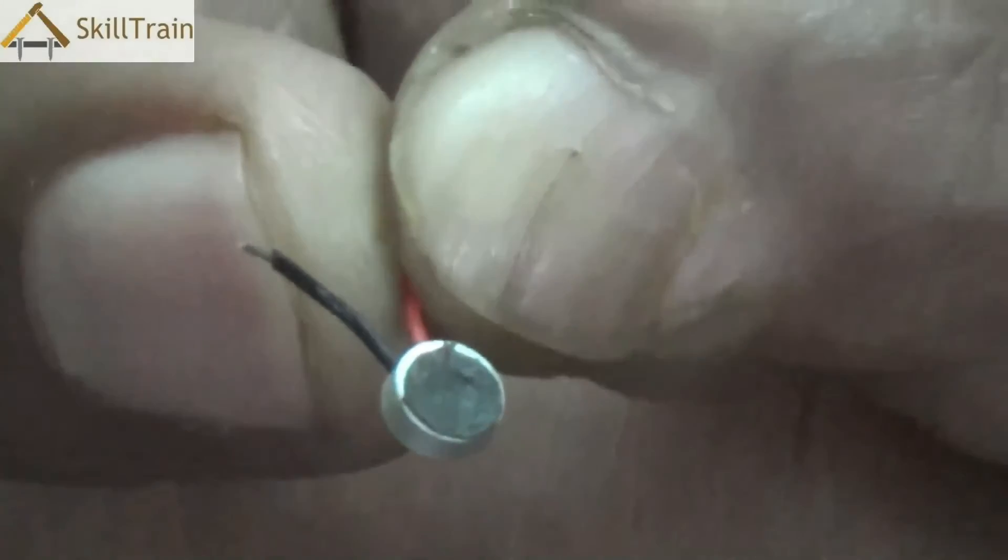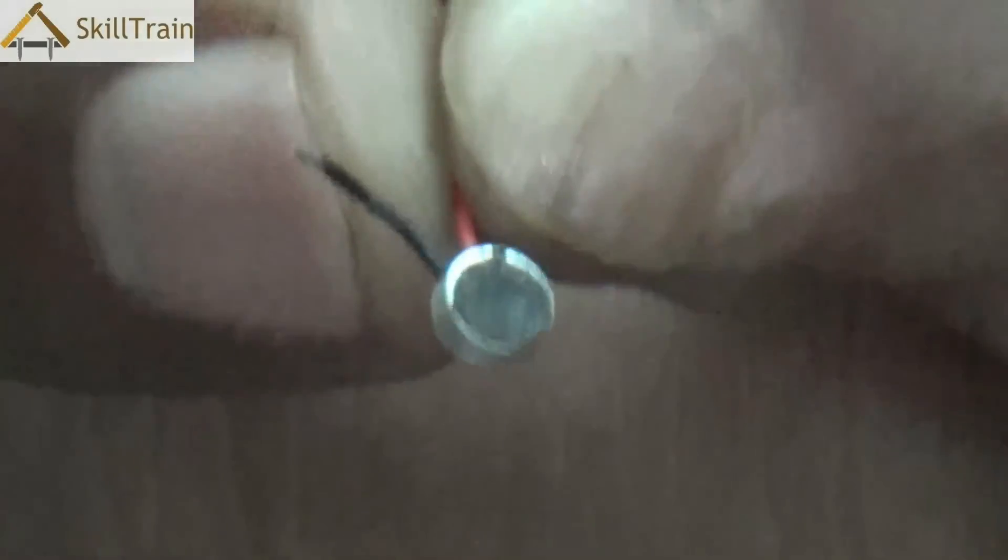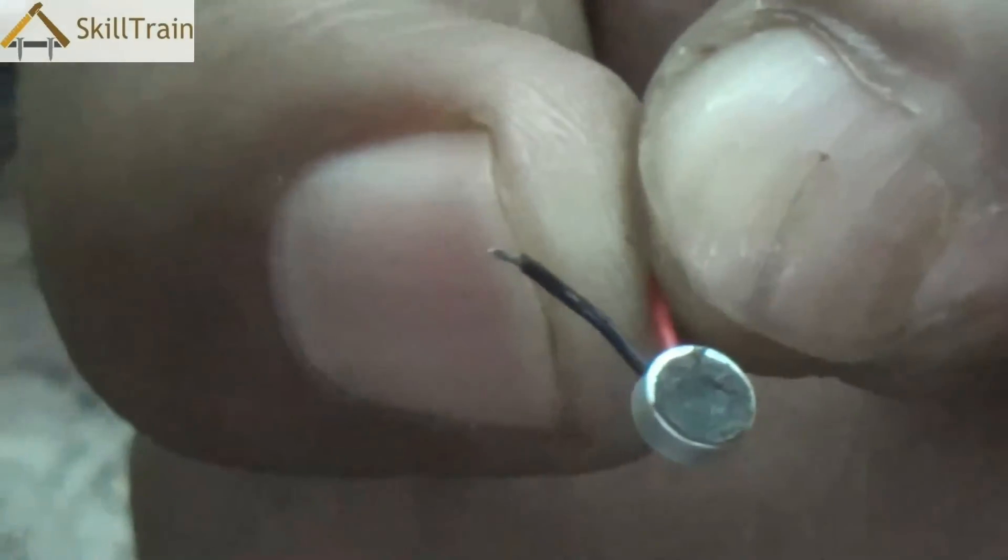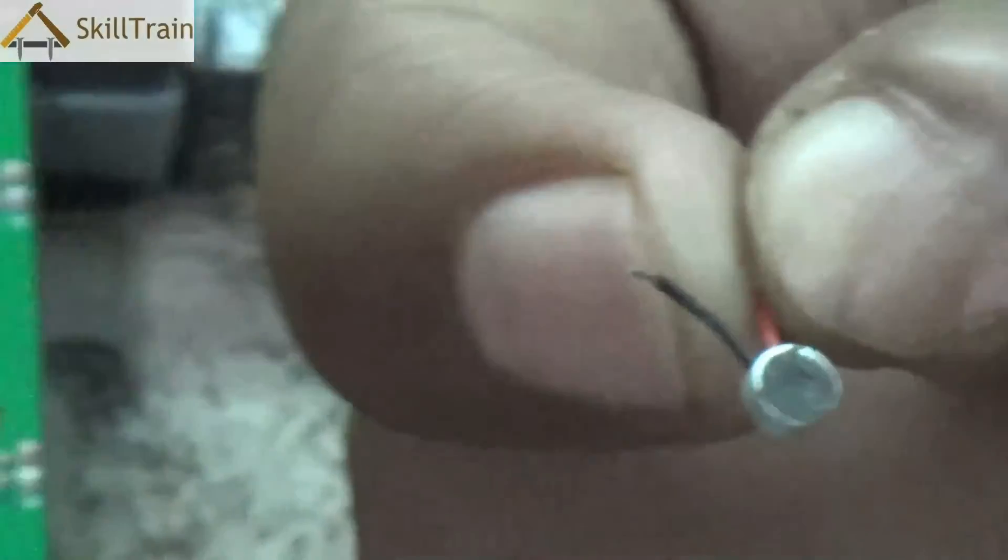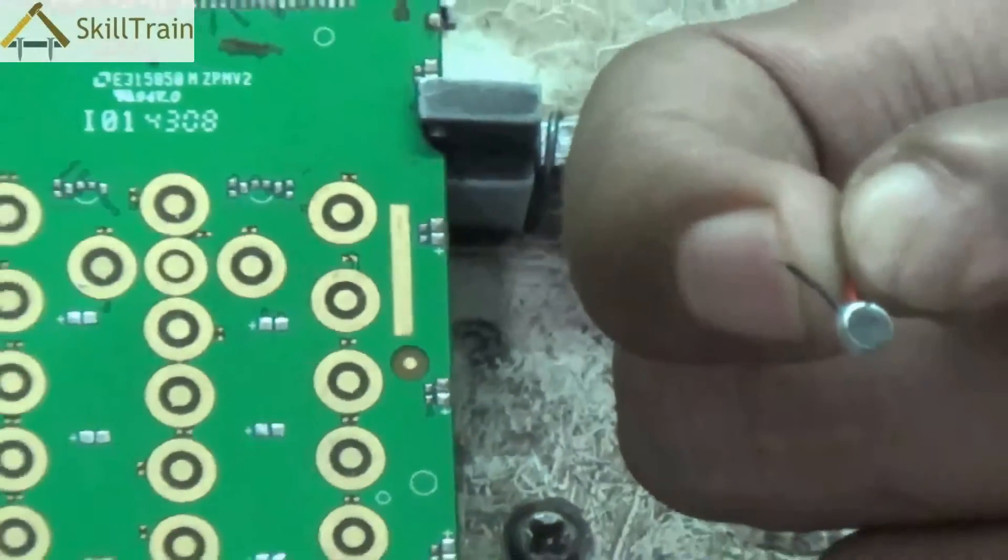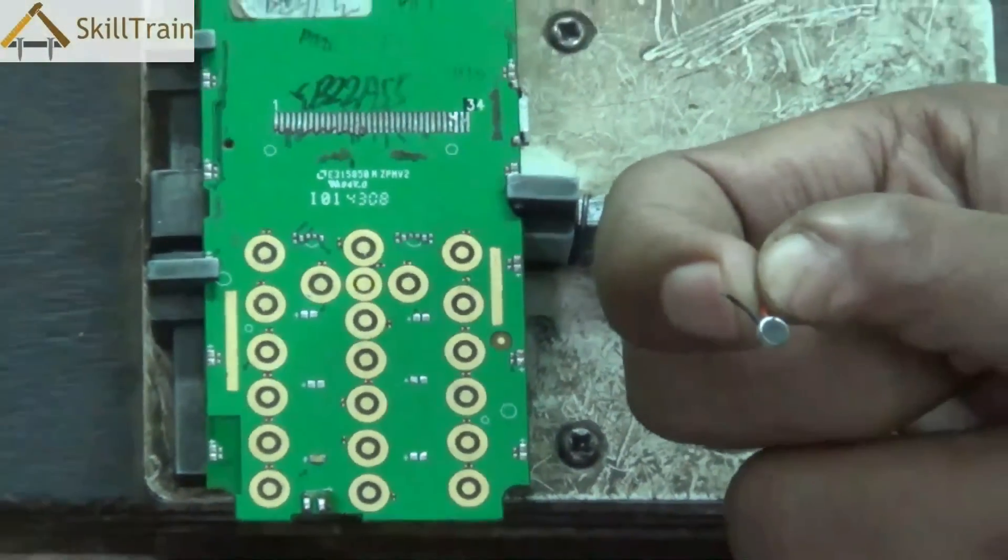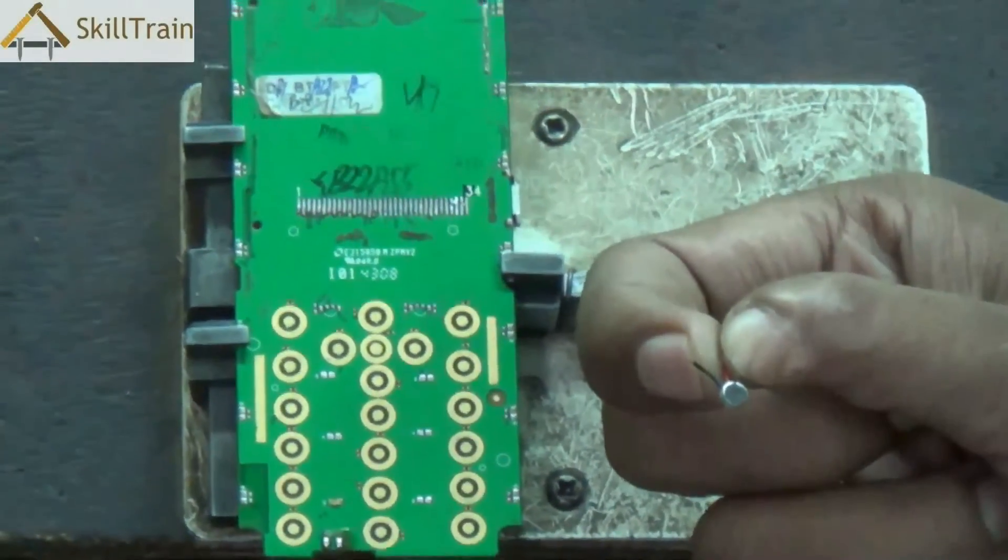Now this microphone cannot be checked using a beep or continuity testing. We did that for components like ringer and a few other components. However, since the mic doesn't have any coil inside, you cannot check this using beep or continuity testing.